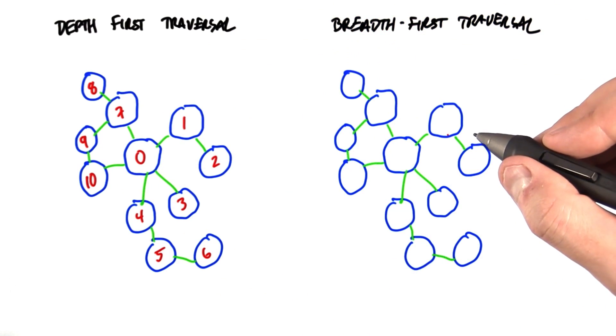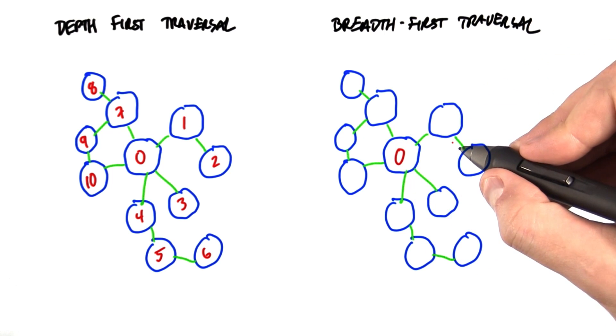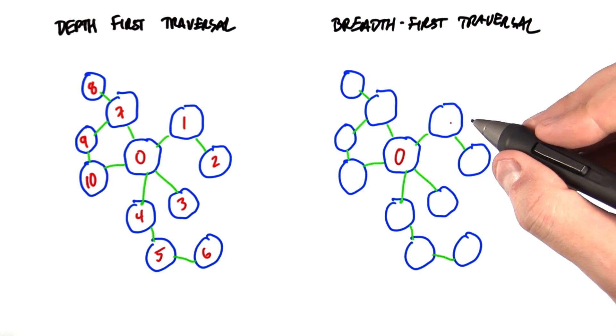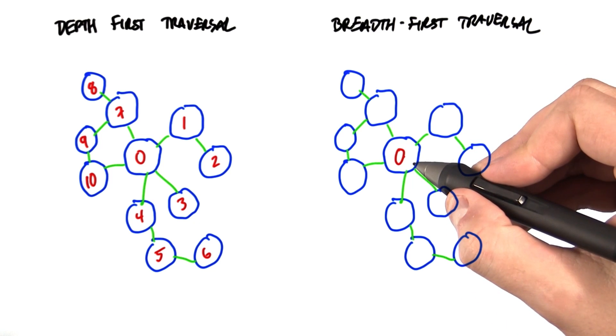In a breadth-first traversal, we're going to begin with a node just as we did in a DFS, and we're going to pick the same starting node, but now we're going to have a different algorithm. So once we're at a particular node and we're running a breadth-first traversal,